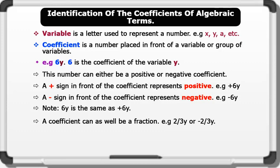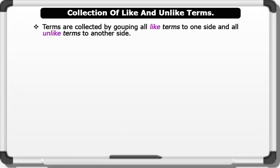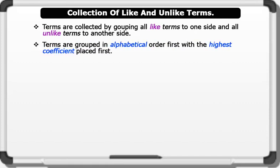Now let's see how to collect like and unlike terms. Terms are collected by grouping all like terms to one side and all unlike terms to another side. Terms are grouped in alphabetical order first, with the highest coefficient placed first. Let's solve some examples.